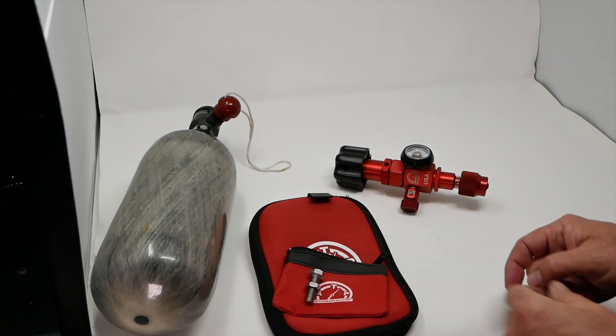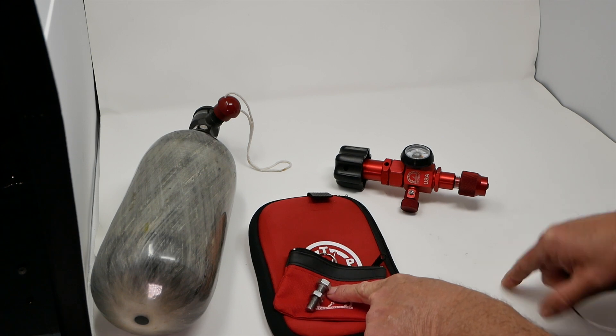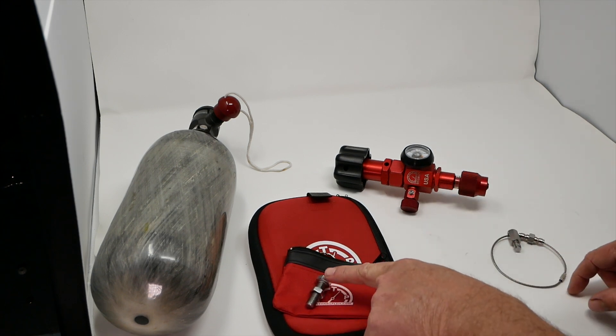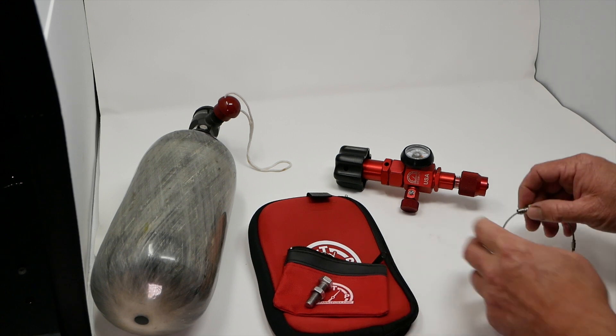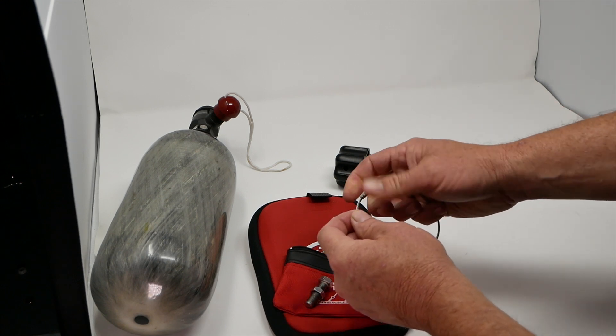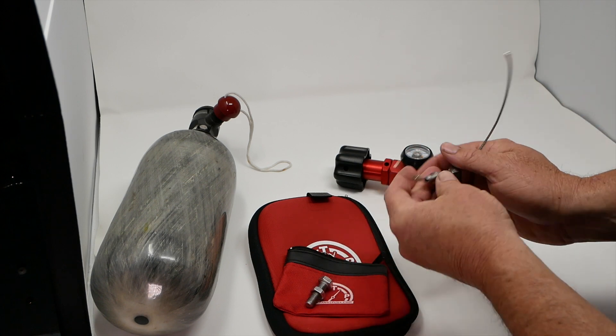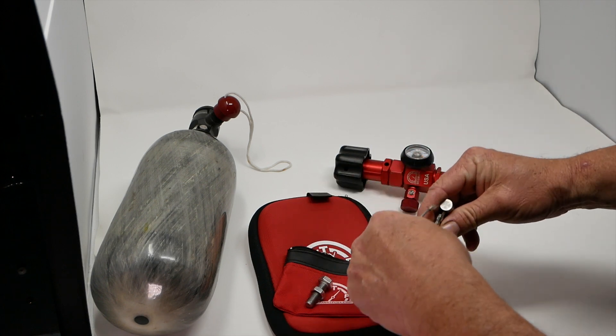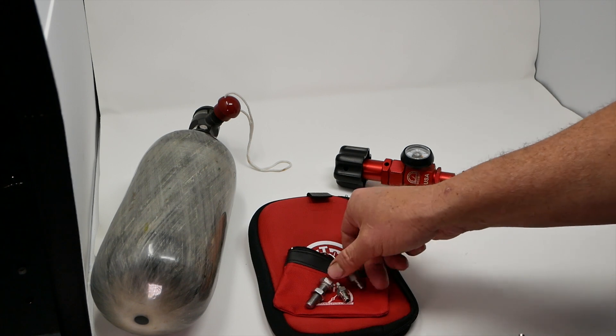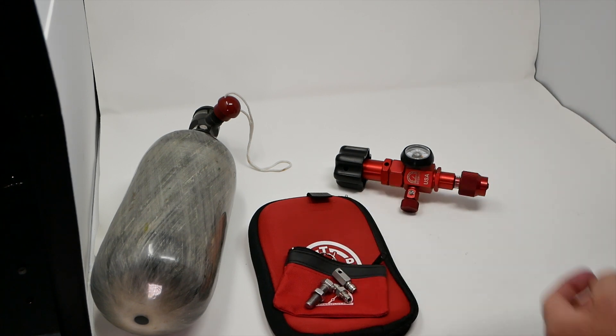There's a pouch that has an adjustment bolt with locking nut. I'll show you how that works. You also get a lanyard, and on that lanyard we have a male-to-male foster fitting and a deadhead. We're giving you everything you need to play with this unit instead of having to order things separately.